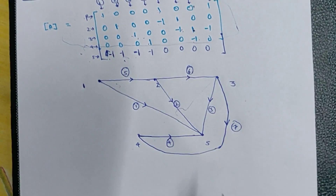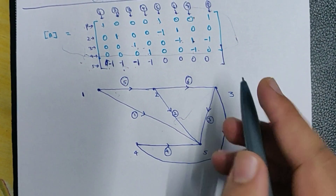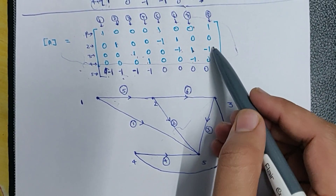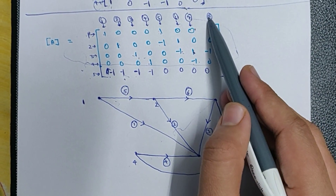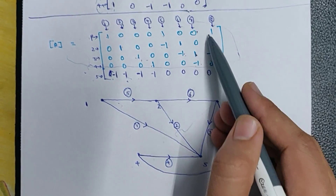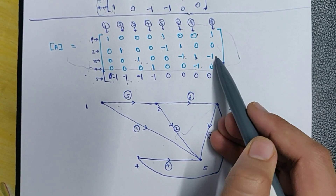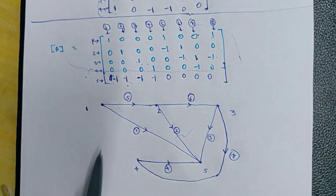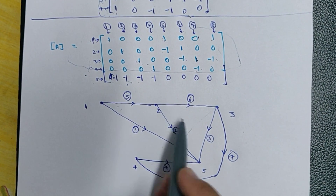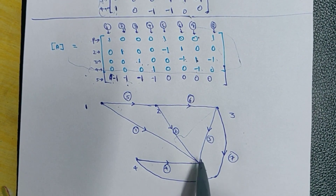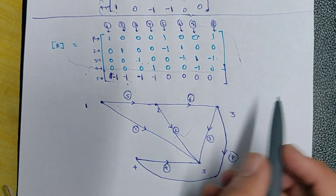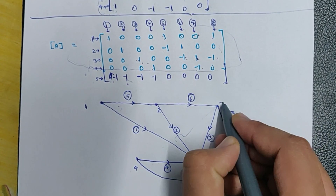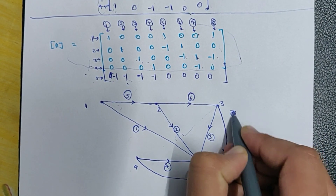Branch 8 is flowing from node 1 to node 3. Between node 1 and node 3 — this is node 3.